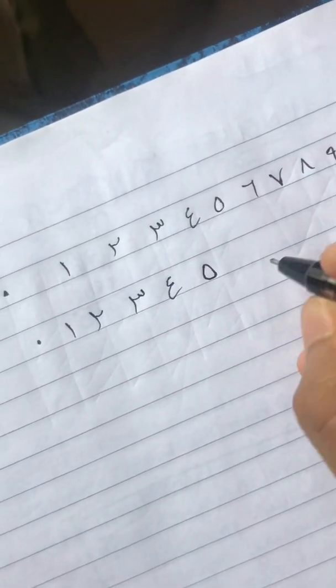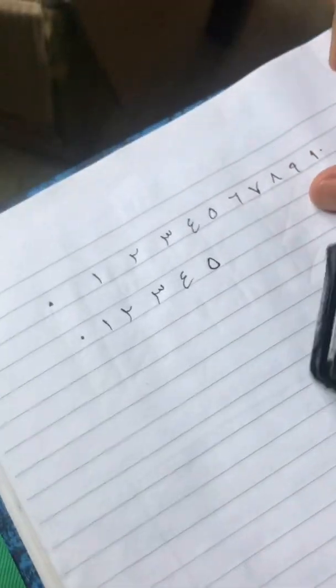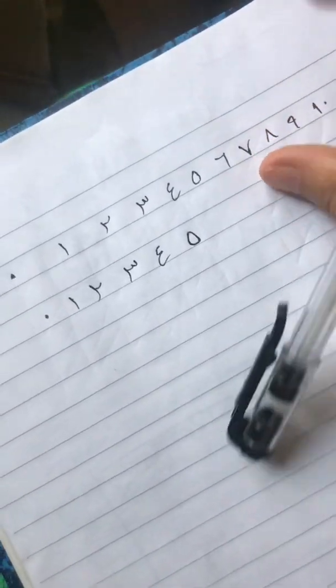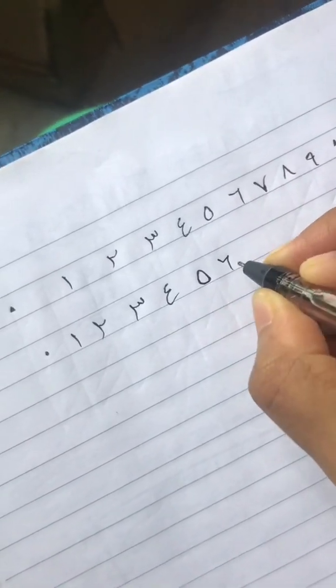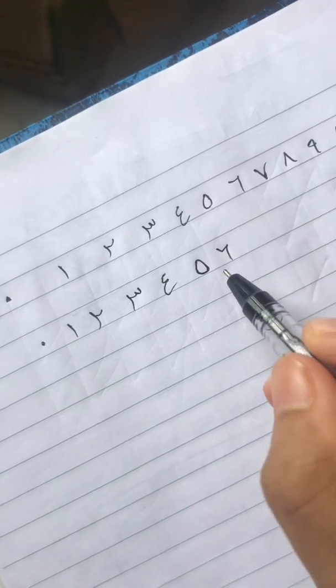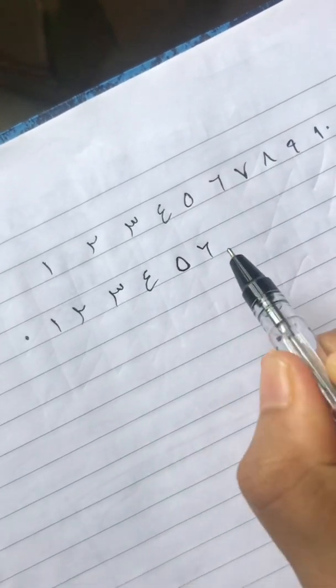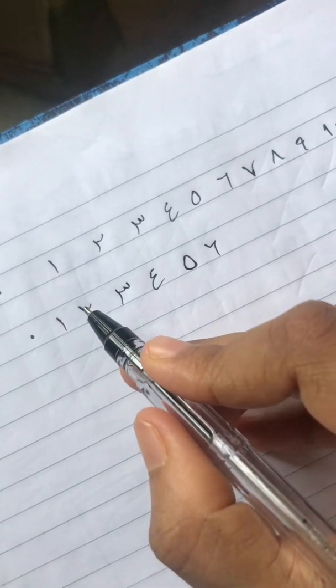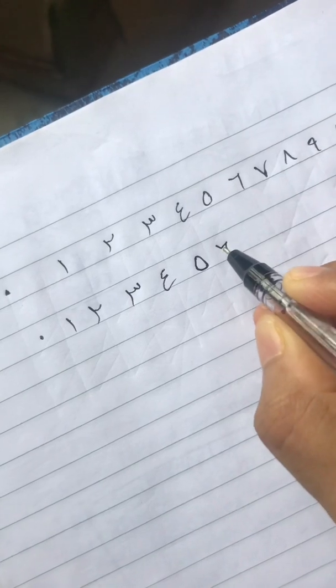That's how you write khamsa, five. Six goes on like this. You should not get confused between two and six. If two, you have it towards the right hand side, and six you have it towards the left hand side.